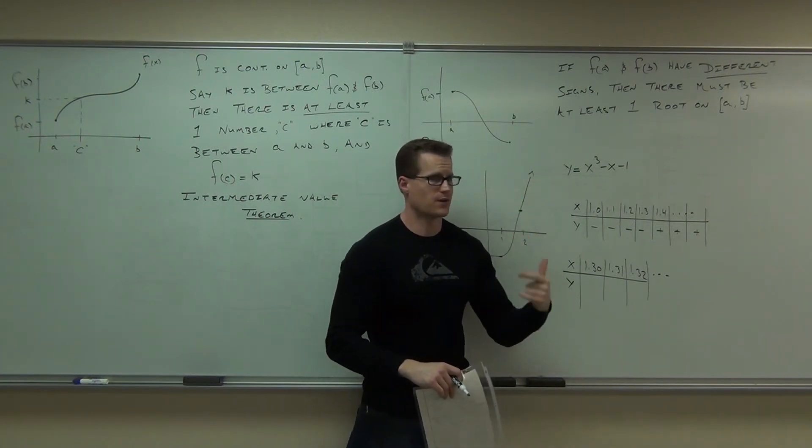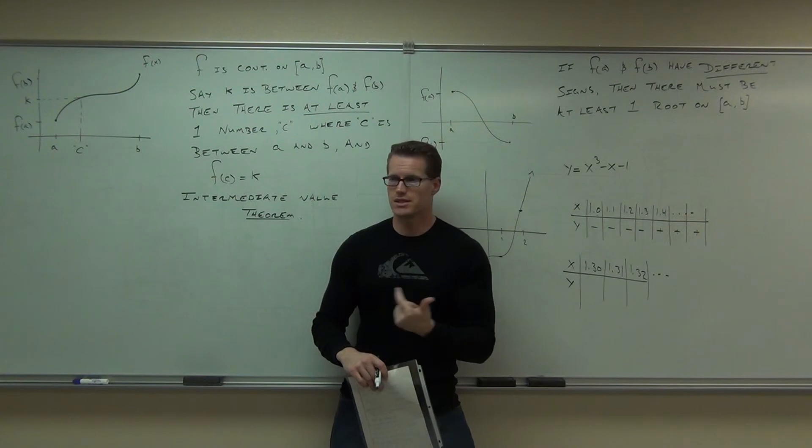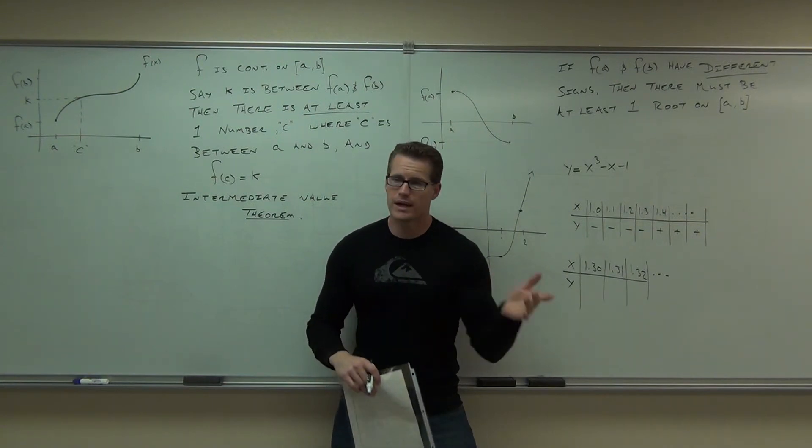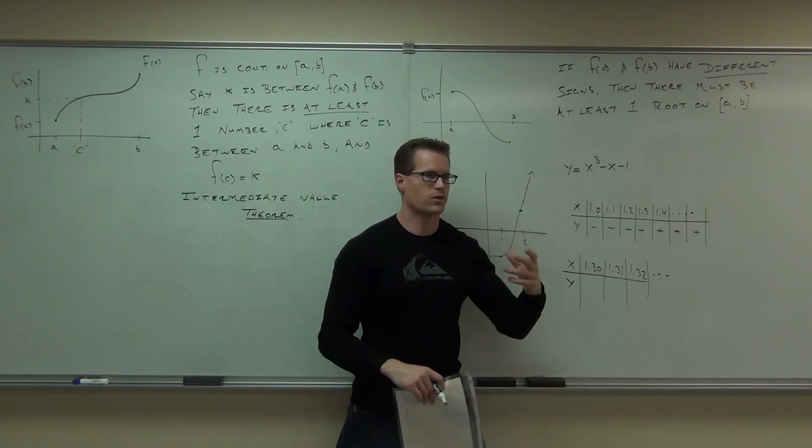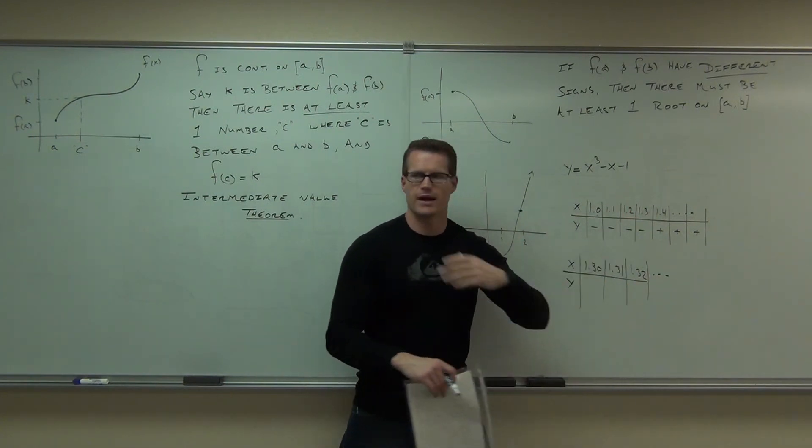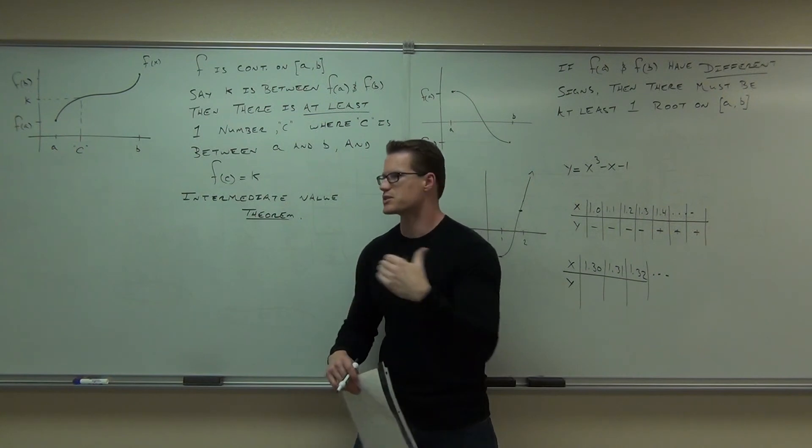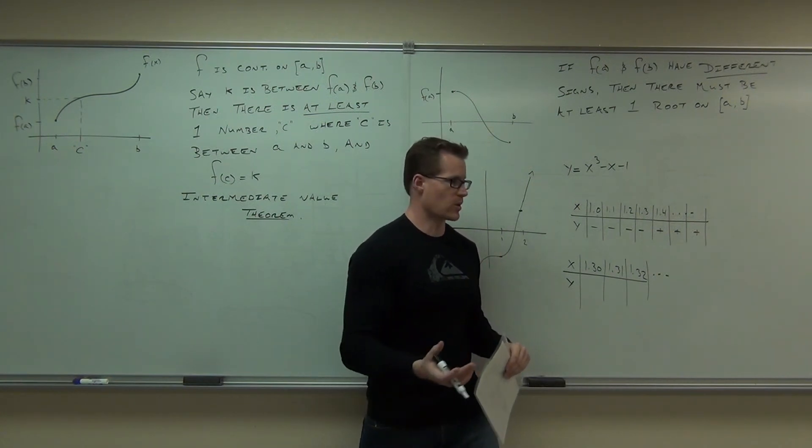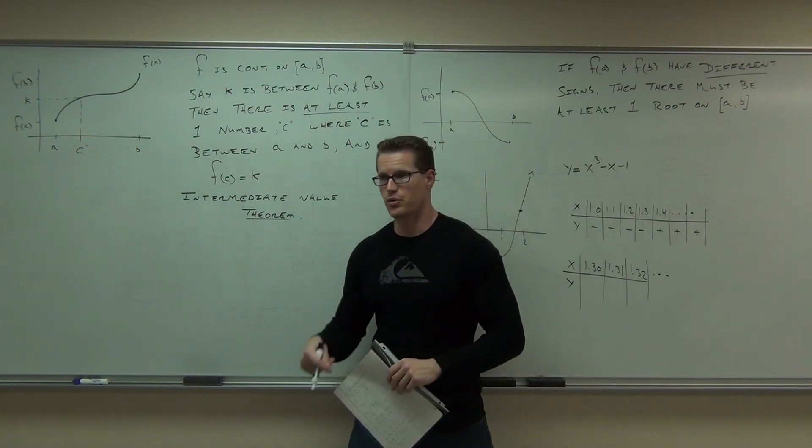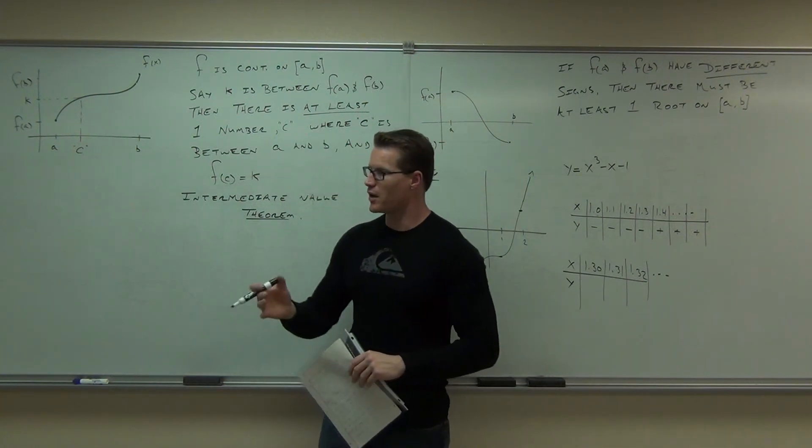Do you see how you can get very accurate with this? You can get to however many decimal places you want. Already I know it's going to be 1.3 something. And then I would do this one. I'd find out it's 1.3 something. I could find out all those numbers as much as I want, as accurate as I want to be. And that's one way you can actually set up a computer program to do that for you, program a calculator that would do that for you. It might take a little bit of time, but it's possible.